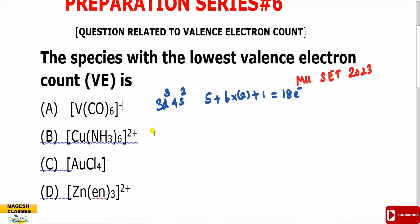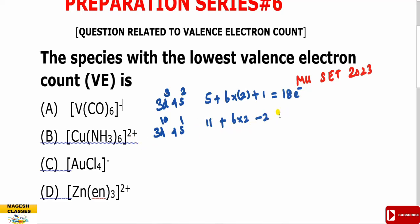The second one is Copper. Copper, Silver, Gold — Coinage Metals. The outer electronic configuration, as we know, is 3d¹⁰ 4s¹. So, 11 electrons from Copper. And Ammonia is the ligand, which gives 2 electrons. So, 6 into 2 equals 12. And the 2+ charge means minus 2 electrons. So, 11 plus 12 minus 2 equals 21 electrons.